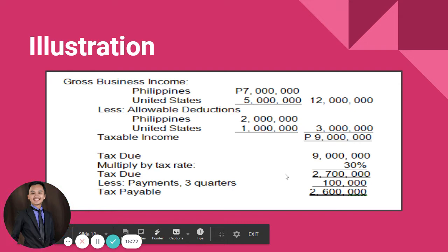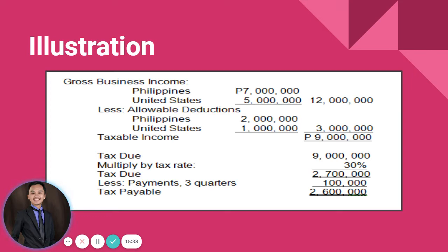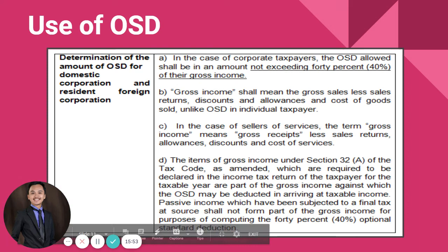Payments made for the first three quarters amount to 100,000, so the total tax payable for the year is 2.6 million. Note that if the taxpayer is a corporation, income tax is paid every quarter — so here we are computing the fourth quarter payment, giving a tax due of 2.7 million and a tax payable of 2.6 million.